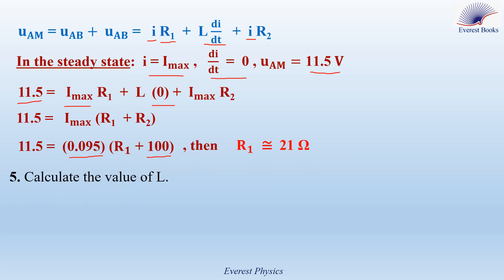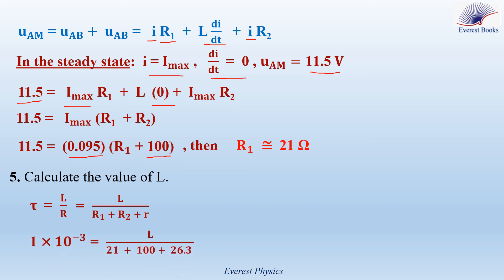Part 5: calculate the value of L. We know that tau equals L over capital R, and capital R equals R1 plus R2 plus r. Replacing each quantity by its value: tau equals 1 millisecond equals 10 to the power minus 3 seconds, R1 equals 21 ohms, r equals 26.3 ohms, and R2 equals 100 ohms. Therefore L equals 0.147 henries, which equals 147 millihenries.